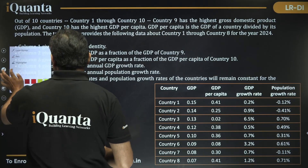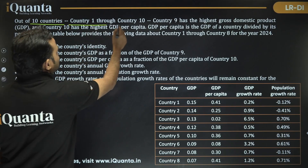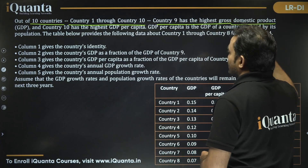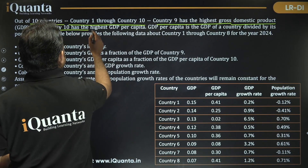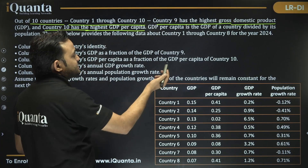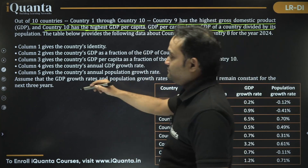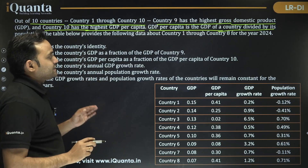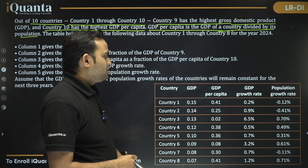The question says: out of 10 countries (country 1 through country 10), country 9 has the highest GDP (gross domestic product), and country 10 has the highest GDP per capita. GDP per capita is the GDP of a country divided by its population. The table below provides data about country 1 through country 8 for the year 2024.